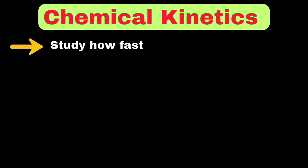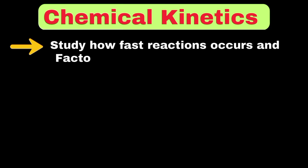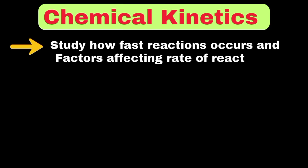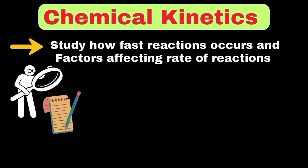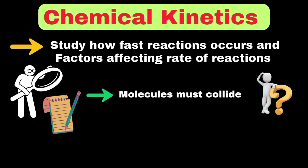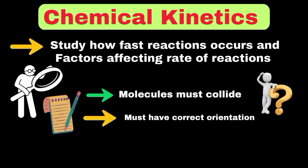Now let's move toward chemical kinetics. Chemical kinetics is the study of how fast chemical reactions occur and what factors affect these reaction rates. For a chemical reaction to occur, molecules must collide with enough energy and in the correct orientation.